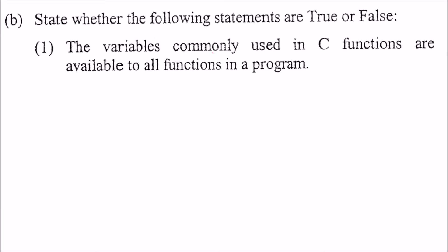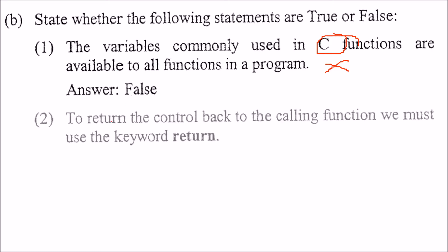State whether the following statements are true or false. The variables commonly used in C functions are available to all functions in a program — this is absolutely wrong. There is a scope for every variable. If it is inside a block or function, it is not available outside. That is why we have global variables. So this is false.